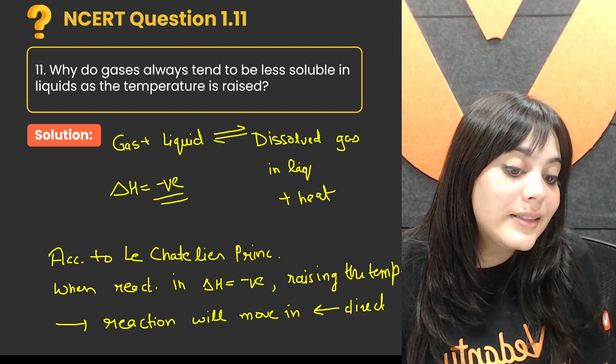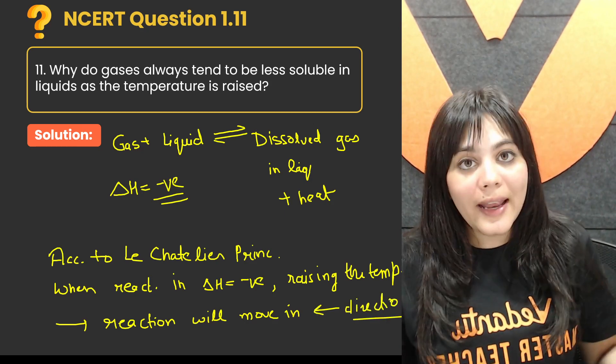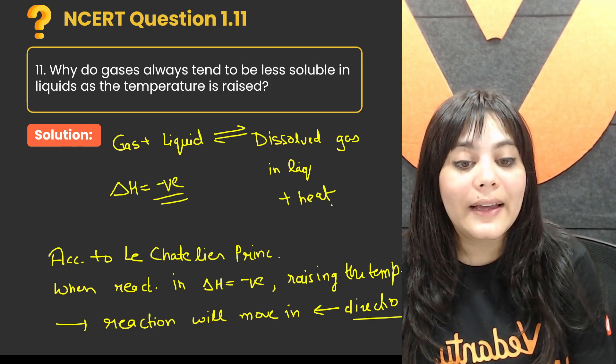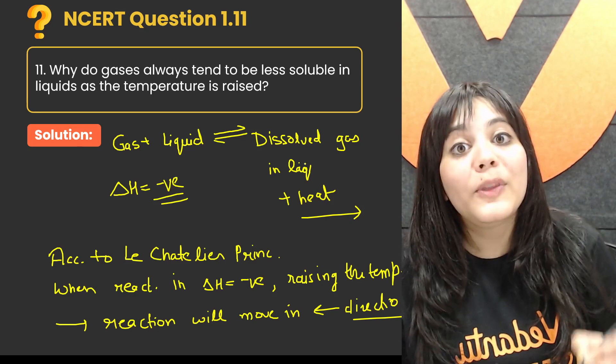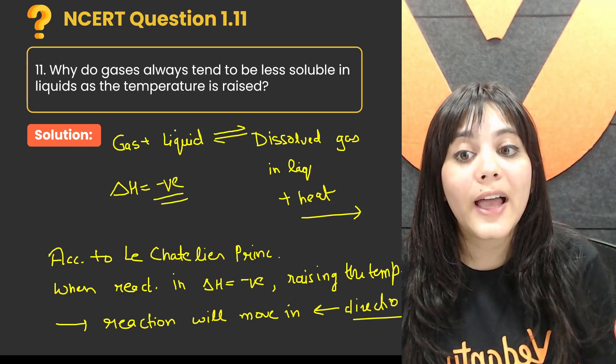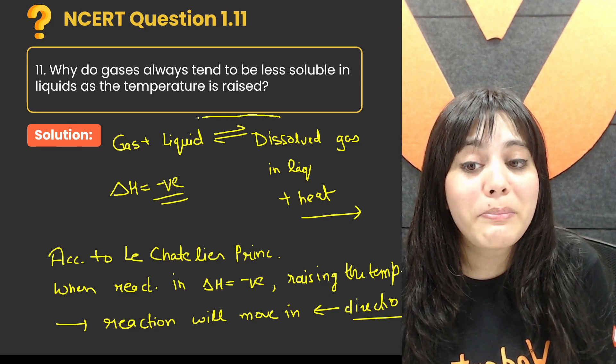If the reaction is exothermic and you have increased the temperature of that reaction, then your reaction will go in the backward direction to counterbalance.